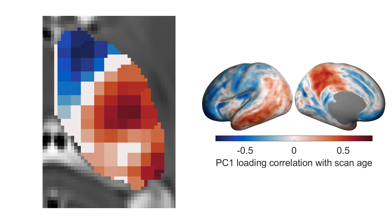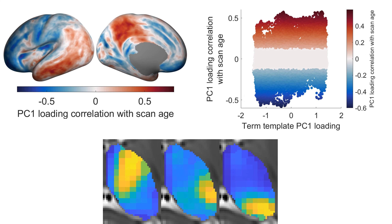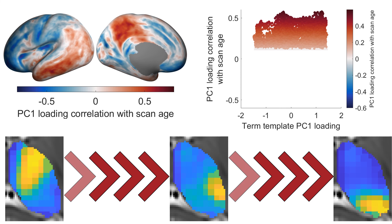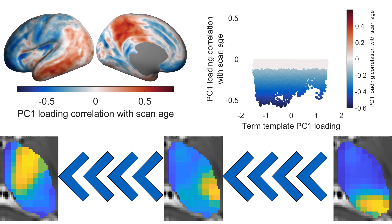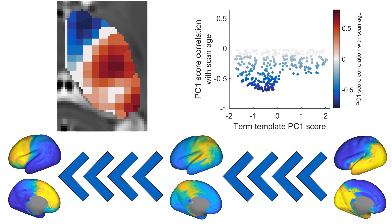What does this mean in terms of the gradient? Focusing on the cortex: if we plot each region's cortical loading against its gradient position on the term template, we can see that these changes vary across the axis. Remembering that changes in the cortical gradient affect preferential connectivity in an anterior-posterior direction, cortical regions showing age-related increases can be thought of as either moving towards a more posterior-dominant pattern of connectivity or away from an anterior-dominant pattern. The same logic can be applied to age-related changes in the thalamic gradient, and these changes in thalamocortical connectivity align with known neurodevelopment.